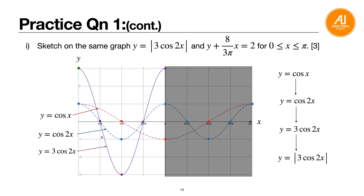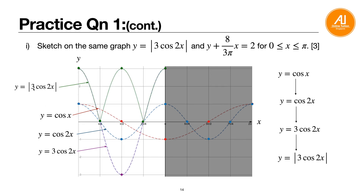Next apply modulus. Looking at the purple curve, only the part in the negative region needs to be reflected. The positive region stays the same. Reflect the negative part upward: negative 3 becomes positive 3, while the zero crossing points remain. Connect the reflected points and you get a W-shape — that's your modulus of 3 cosine 2x.